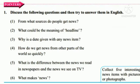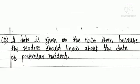Question 3: Why is a date given with any news item? That is, why is a date given with every news item? The answer is: a date is given on the news item because the readers should know about the date of the particular incident. Meaning, so that readers know the date of that event, a date is given with every news item.